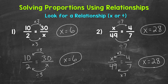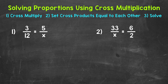So there you have it — that's how you solve proportions using relationships. Now again, not all proportions will have a straightforward relationship like these examples did, but it is a method to keep in mind if you do notice a relationship and can use it to solve for your unknown. Now let's take a look at cross multiplication, a method we can use for any proportion, not just proportions where we notice a relationship. When solving proportions using cross multiplication, we cross multiply, set the cross products equal to each other, and solve.